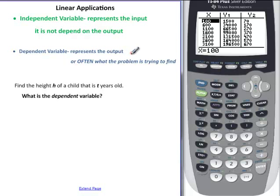That's what you need to know to be able to find something else. The dependent variable is the output, and very often it is, if you read the problem, what they're asking you to find will be the output. Not always, but very often.